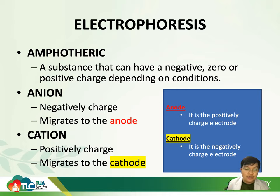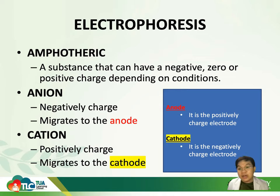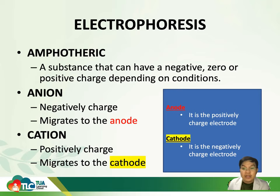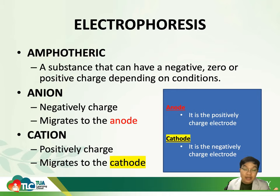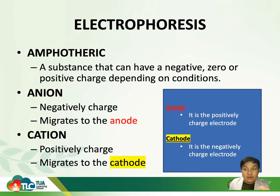We also have anions — negatively charged molecules that migrate to the anode. The reason we call them anions is because these molecules migrate toward the anode. On the other hand, we have cations — positively charged ions that migrate toward the cathode. So anions have a negative charge, and cations have a positive charge.